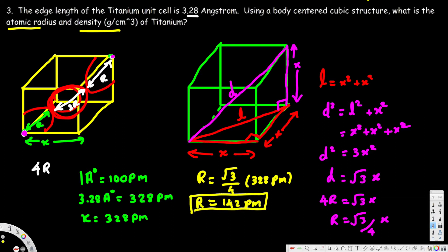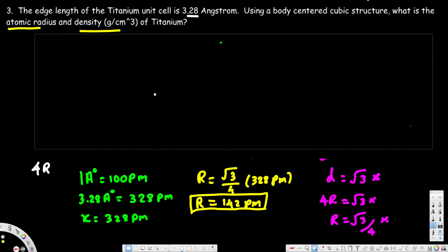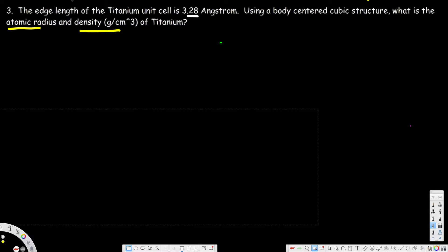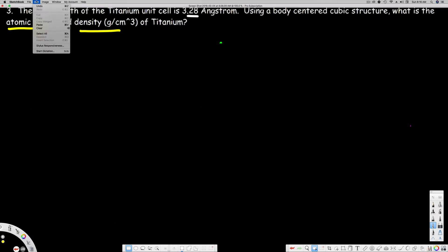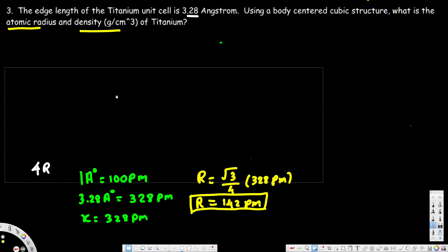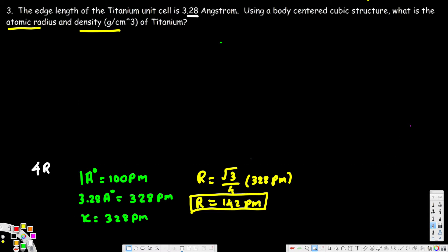That's the answer for the first part. The second part asks for the density in grams per centimeter cubed. We know that density equals mass divided by volume.